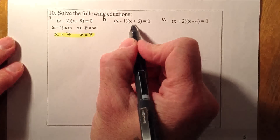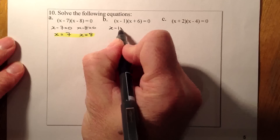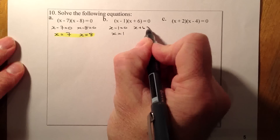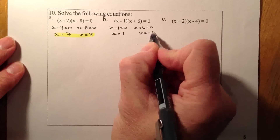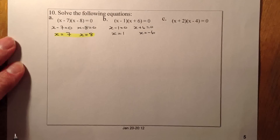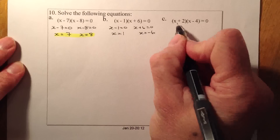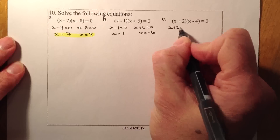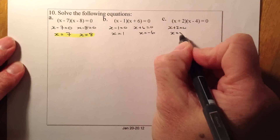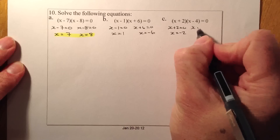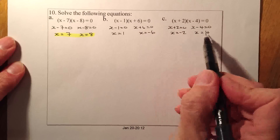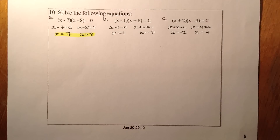I've got (x minus 1)(x plus 6) equals 0. So x minus 1 equals 0, giving x equals 1. And x plus 6 equals 0, giving x equals minus 6. That's the mark for that question. Next: (x plus 2)(x minus 4) equals 0. So x plus 2 equals 0 gives x equals minus 2, and x minus 4 equals 0 gives x equals 4. That's one mark for that part. So that's question 10, just out of one mark.